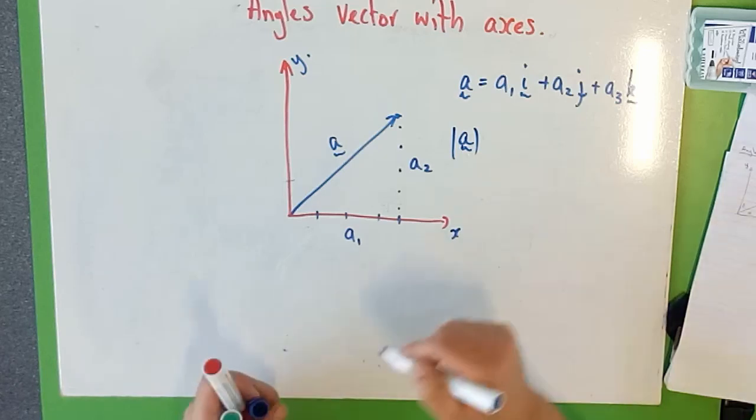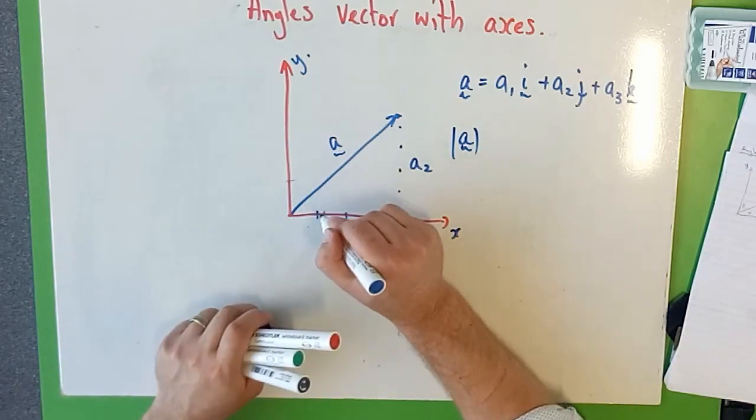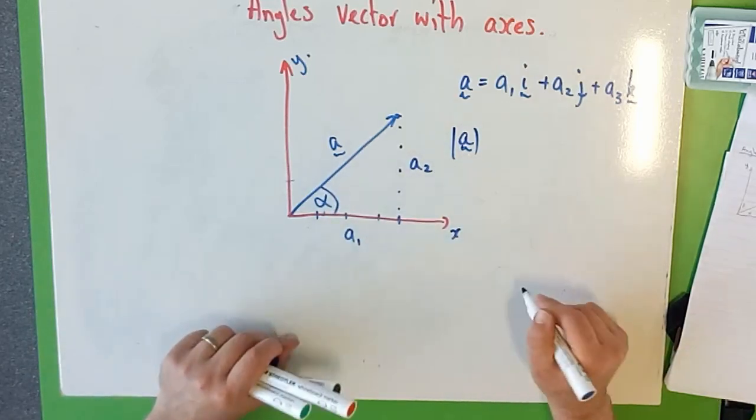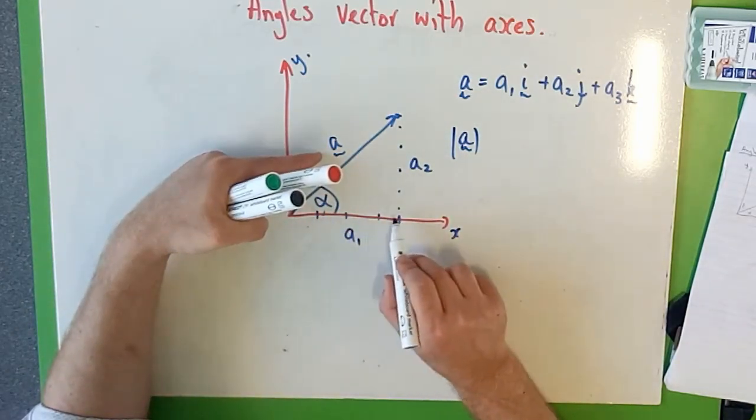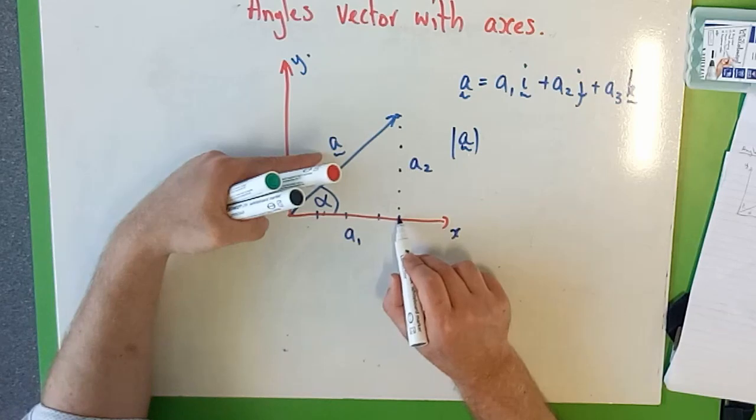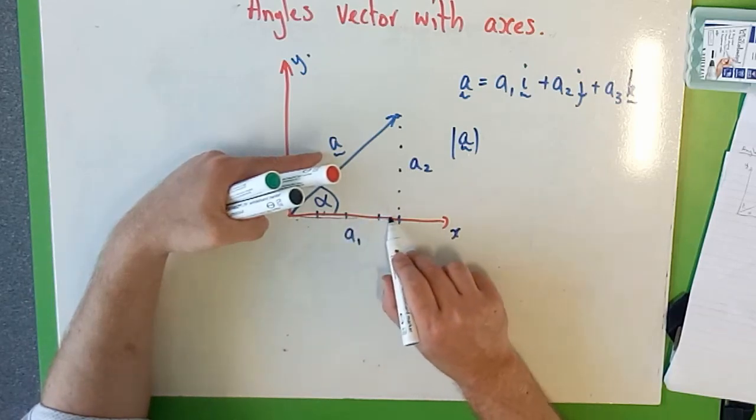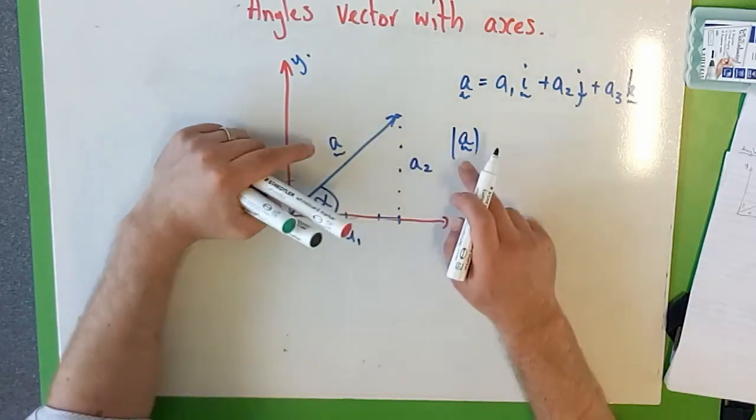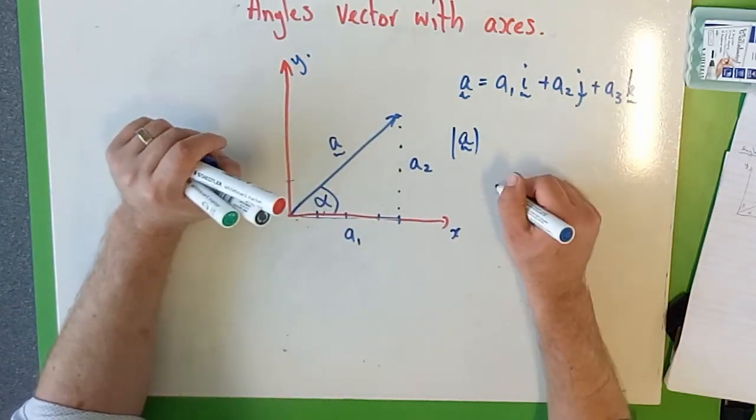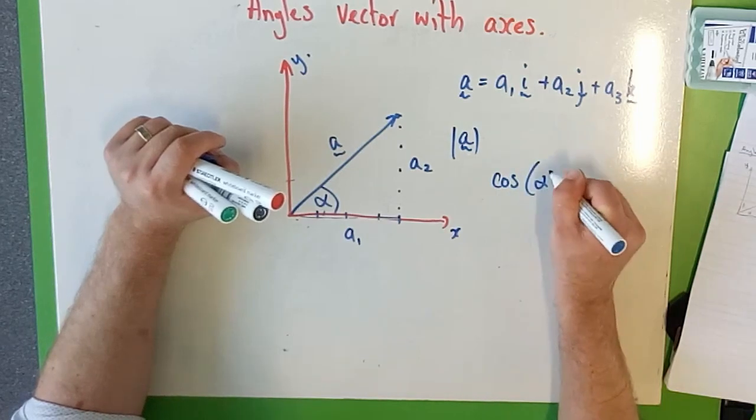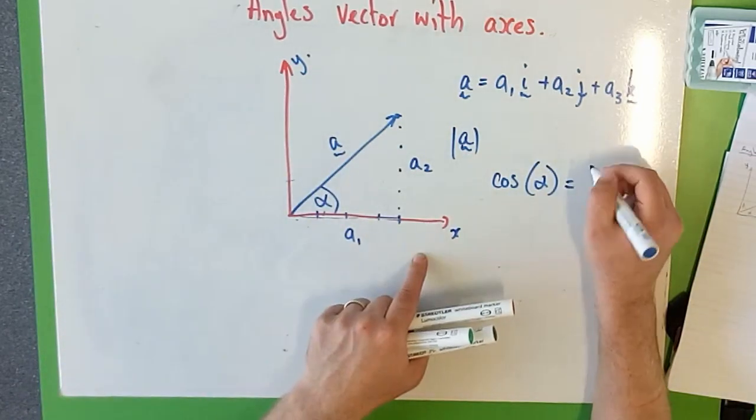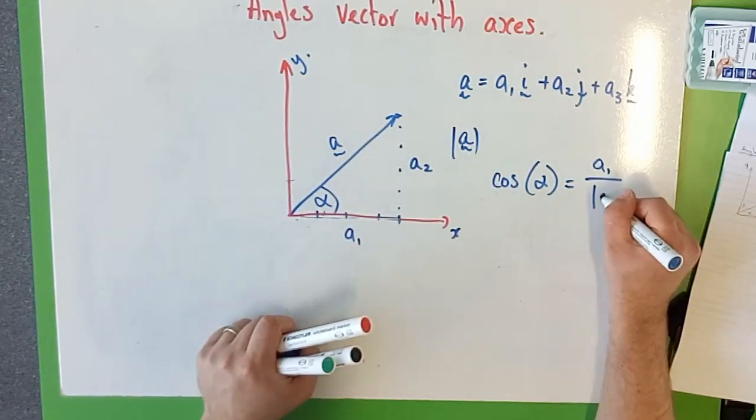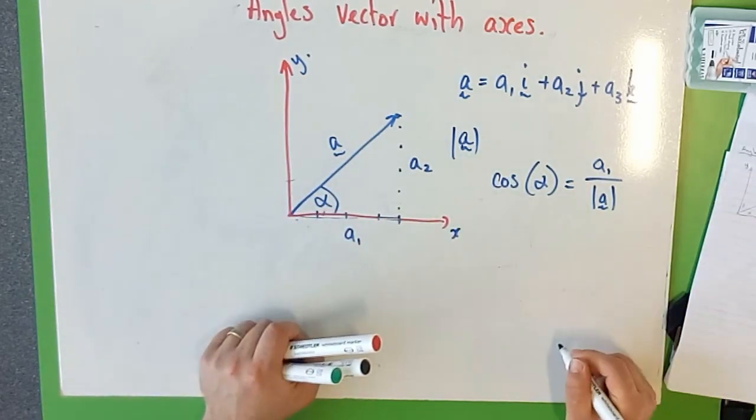So if I want to find the angle that it makes with the x-axis, we call that alpha. So if I want to find that, this is just simple trigonometry here. I've got this side length, which is the adjacent side length, and I know the magnitude of a, which is the hypotenuse. And so because I know cos of alpha has to equal the adjacent side over the hypotenuse, a1 over the magnitude of a.